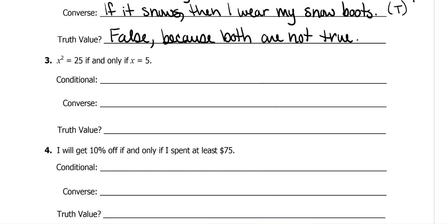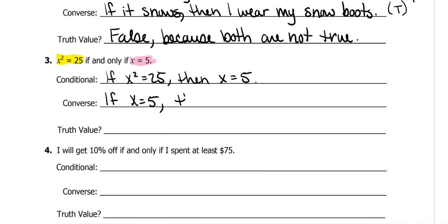This one uses math for its hypothesis and conclusion. We write: 'If x squared equals 25, then x equals 5.' Then we flip it for the converse: 'If x equals 5, then x squared equals 25.'